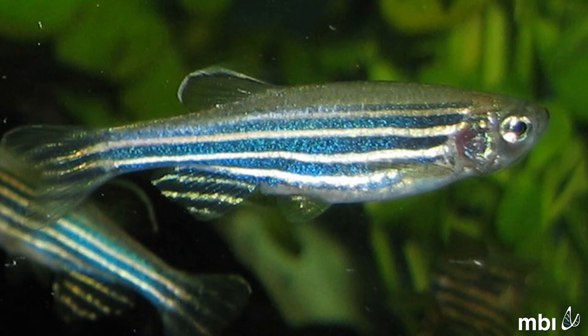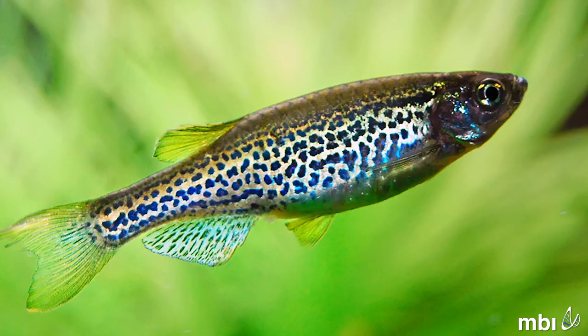Not only did they look at the wild type cells which do this spiraling, they looked at mutant fish. These mutant fish spiral in different ways and also have different patterns.